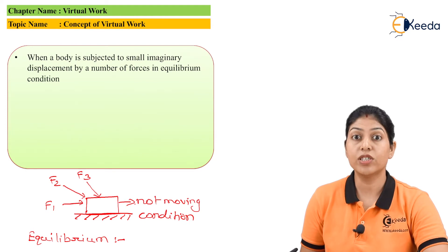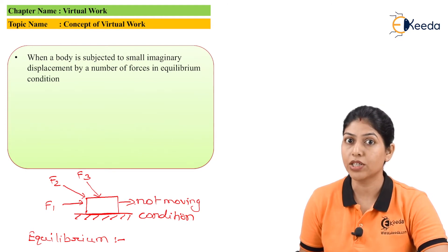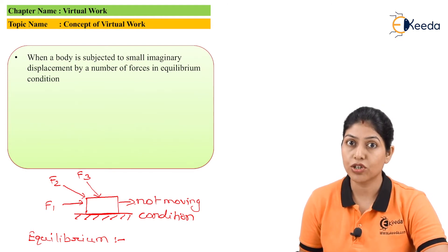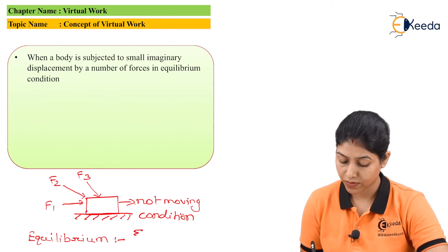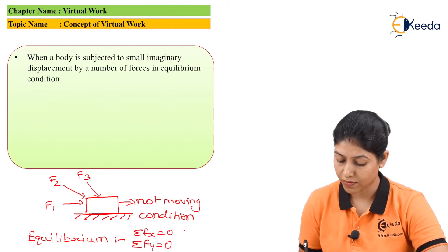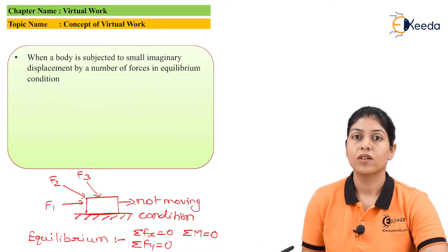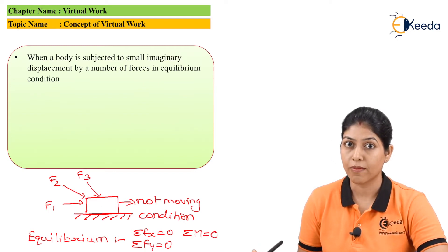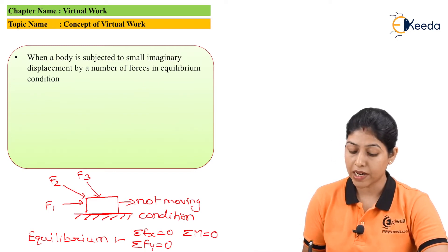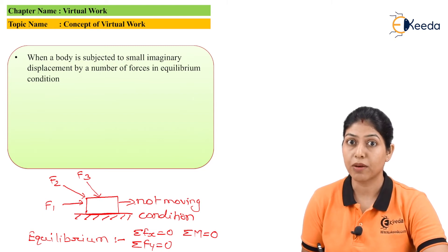We generally define the equilibrium conditions by: summation of Fx equals zero, summation of Fy equals zero, summation of Fz equals zero, and summation of moment equals zero. These are the three basic conditions of equilibrium, and these conditions we can apply on this particular body when, after application of forces, this body is not in the moving condition.